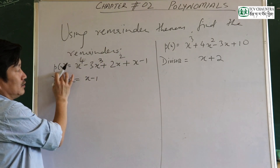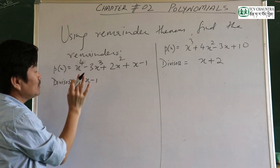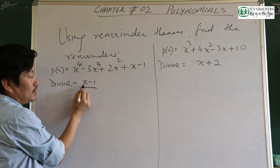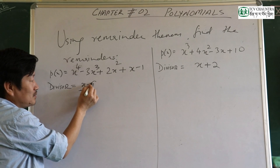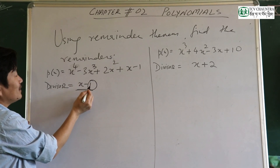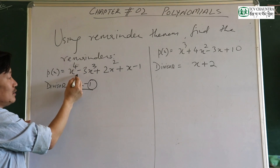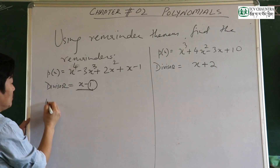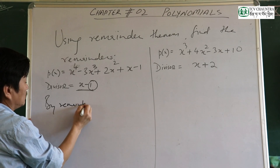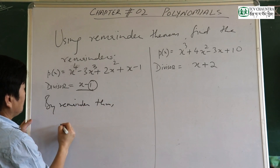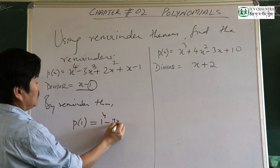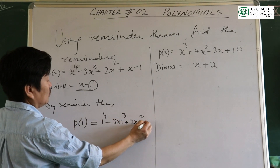Using remainder theorem, find the remainder. The linear polynomial is x minus 1. By remainder theorem, remainder equals p of 1, which equals 1 to the power 4 plus 3 into 1 to the power 3 plus 2 into 1 squared plus 1 minus 1.